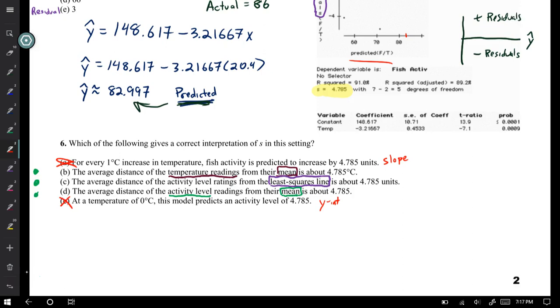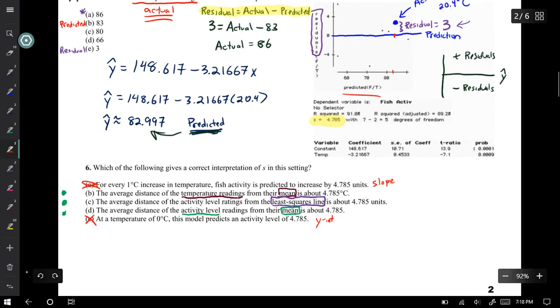Something's wrong with it, but as a student, I'm reading average distance, standard deviation, and I might circle it. So let's leave it there. The average distance of the activity level ratings from the least squares line is about 4.785 units. Very similar to choice B, but this one uses a different word.